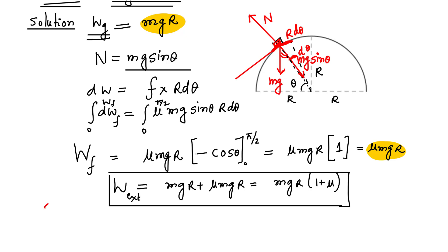Now I have a question for you. In this problem there were two components of force — mg*sin(theta) and mg*cos(theta) — plus the friction force mu*N. We calculated the work done by mu*N, but we did not separately calculate the work done by mg*cos(theta). Why not? Is the work done by mg*cos(theta) the same as the change in potential energy, mgR? Let us discuss this in the comments. I hope you are liking the videos — please share with your friends. Thank you.